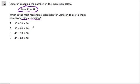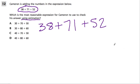Okay, the keyword here is estimation. So 38 plus 71 plus 52. Well, if you were to estimate each of these, you want to pick something reasonable.